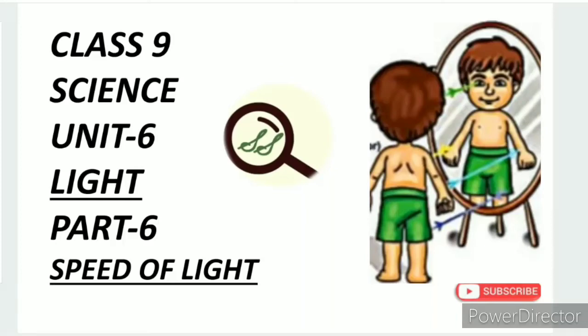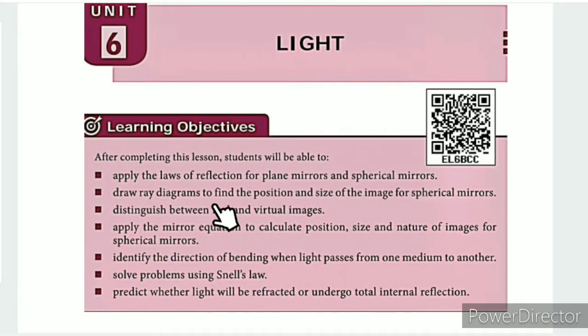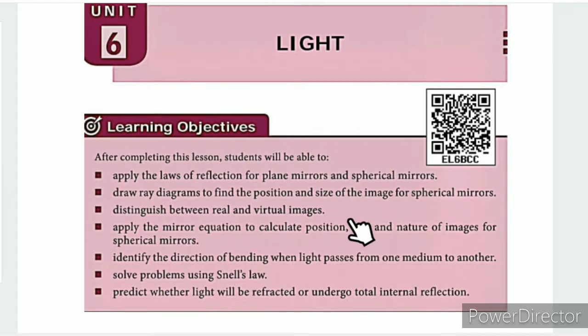From SS Class 9 Science Unit 6 Light Part 6: Speed of Light. The learning objectives are: apply the laws of reflection for plane mirrors and spherical mirrors; draw ray diagrams to find the position and size of the image for spherical mirrors; distinguish between real and virtual images; apply the mirror equation to calculate position, size and nature of images for spherical mirrors.